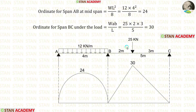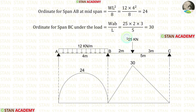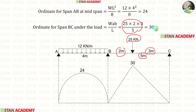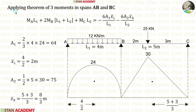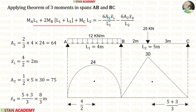In a simply supported beam, if a point load is not acting at the center, the formula for the maximum bending moment under the load is WAB/L. Here W is 25, A is 2, B is 3, L is 5. Applying all values in the formula, we get 30.